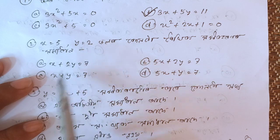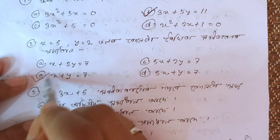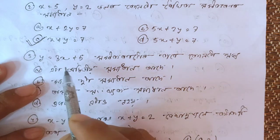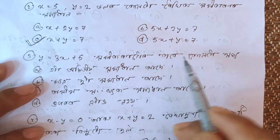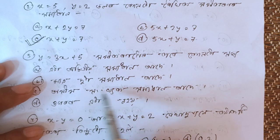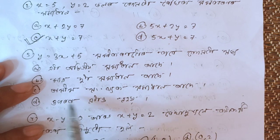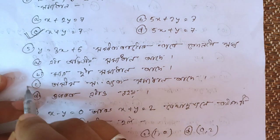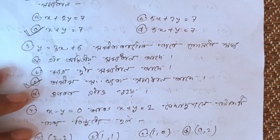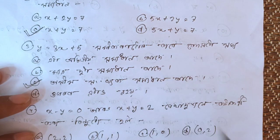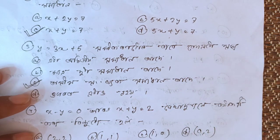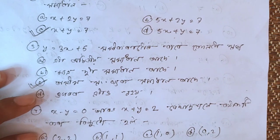The next question is y equals 3x plus 5 equals 2. This is the same thing. This question is 1, so be sure to check the same thing. Now we have to check the same thing. If you look at the same thing, you can find the same thing. Your question number is 3x equals 5.